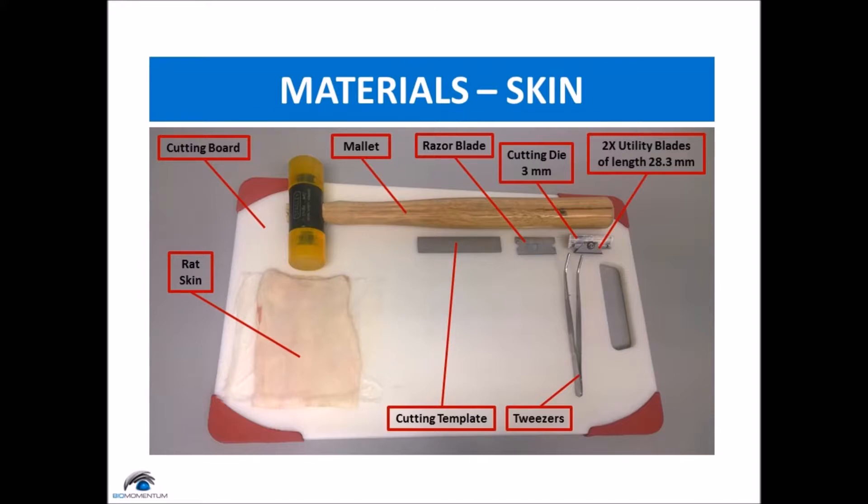To prepare dog bone shaped skin samples, we will be using a cutting board, rat skin, a mallet, razor blade, a cutting die with utility blades installed, a cutting template, and tweezers.